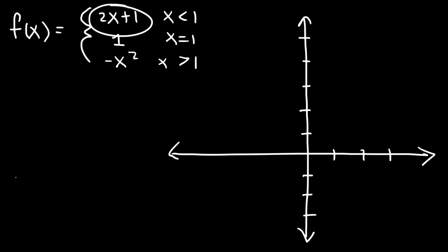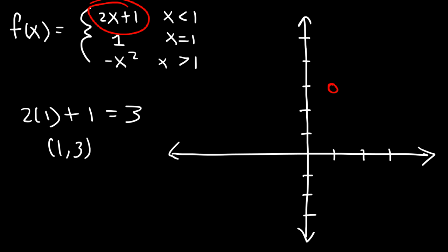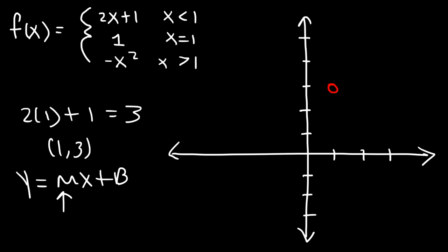Let's start with the first piece. When x is 1, if we plug 1 into the expression 2x plus 1, that's 2 times 1 plus 1, giving us the point 1 comma 3, and that's going to be an open circle because it doesn't include 1. This graph has a slope of 2 and a y-intercept of 1 — it's a linear equation in the form y equals mx plus b. So when x is 0, y is 1.